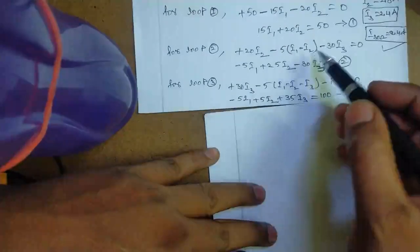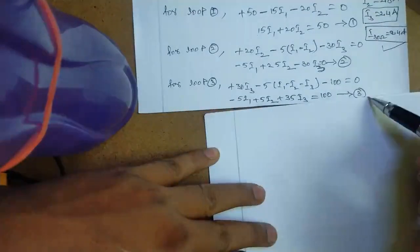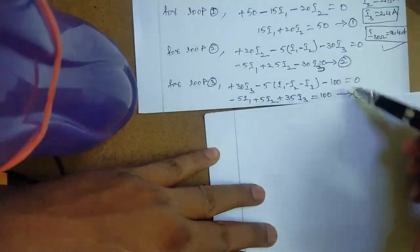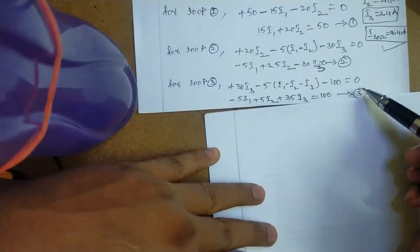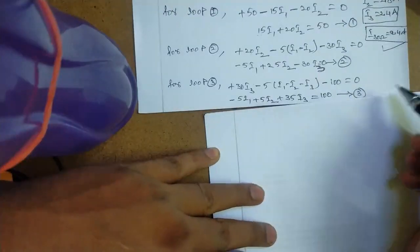Here, three equations: 1, 2, and 3. The above three equations are solved by using Cramer's rule as well.